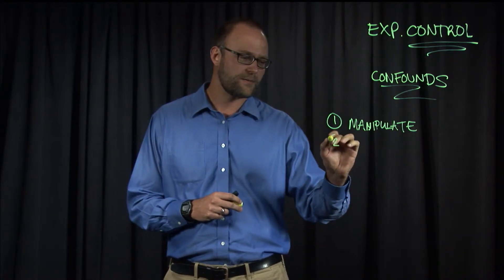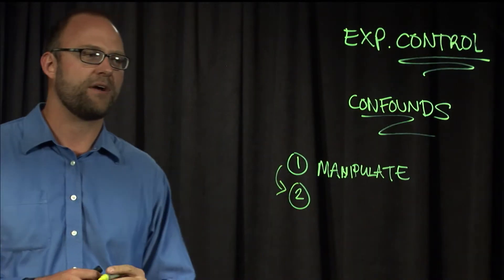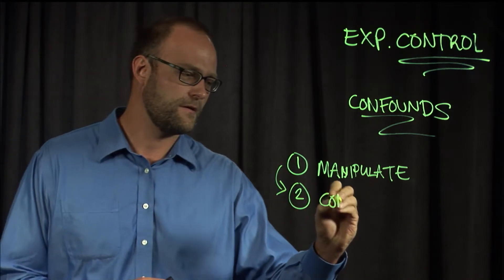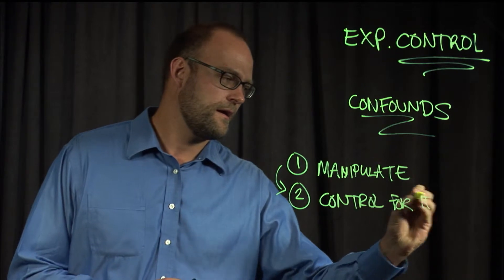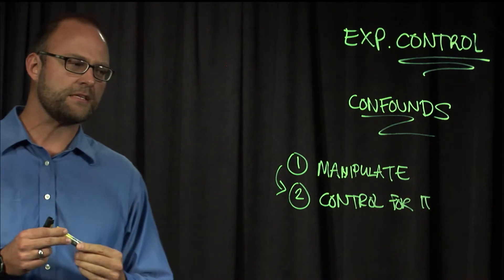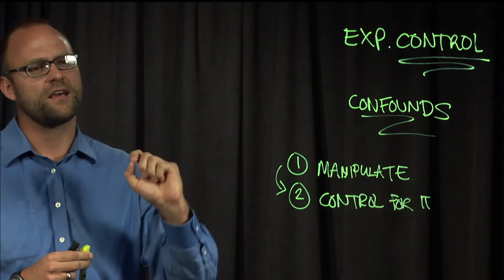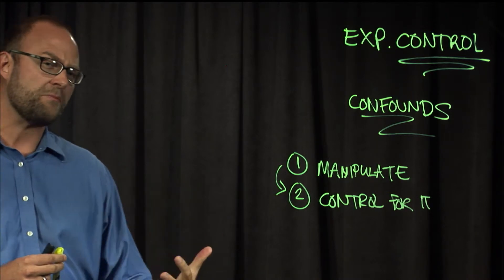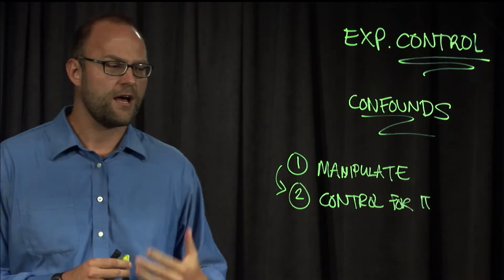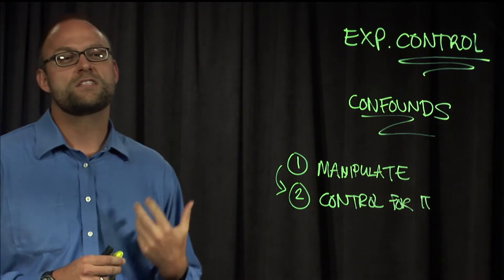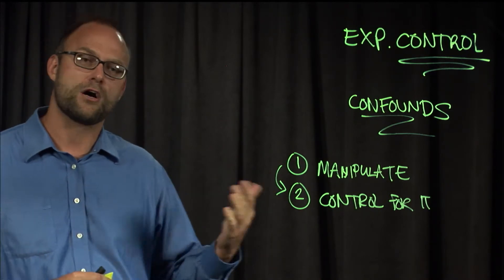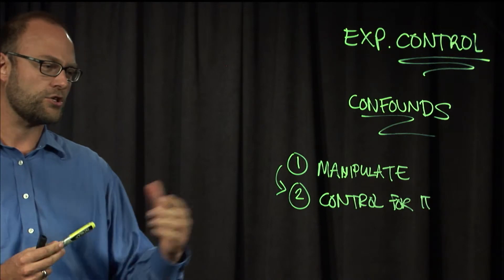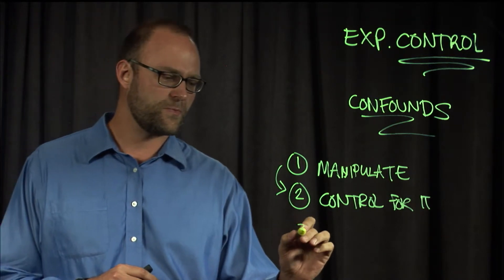If we can't manipulate something, then the next step might be to control for it. If we can control for it, that means maybe we can't manipulate it, so we can't have low experience, medium experience, and high experience teachers, but maybe we can say, let's make sure all the students get the same experienced teacher, whether they're low, medium, or high. That's called controlling, in that case, for teacher experience.